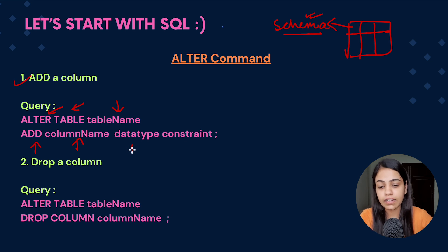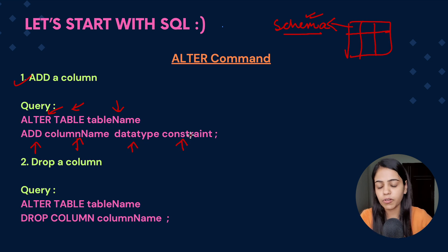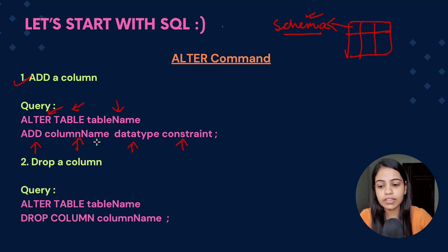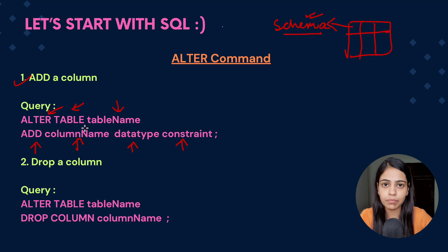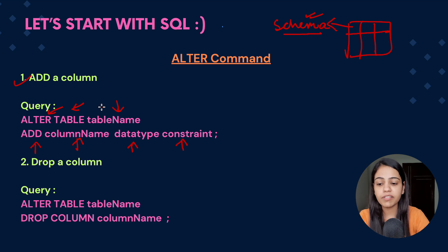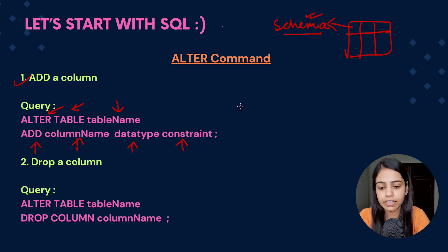Then we provide ADD and then the column name — which column we are adding — then the data type of that particular column, and if we have any constraint we provide that. So whenever we used to create the table we used to provide column name, data type, and constraint. In the same way when adding a column we provide all those properties, followed by ALTER TABLE and the table name in which we want to alter the data.